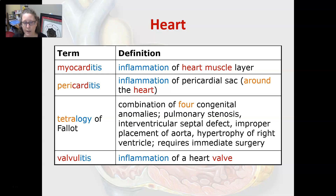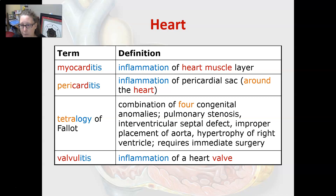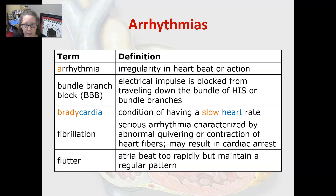Tetralogy of Fallot is commonly seen in babies born with Down syndrome. The four abnormalities are: pulmonary stenosis, interventricular septal defects (holes in the interventricular septum), improper placement of the aorta — which can override into one of the holes between the ventricles — and hypertrophy of the right ventricle. This requires immediate surgery to correct. Valvulitis is an inflammation of a heart valve.